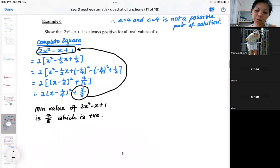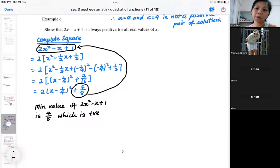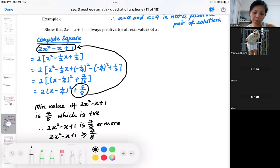Complete square is meant to tell you the minimum or the maximum. In our case, it's the minimum value, so my conclusion is this is 7/8 or more. That means the whole function will always be greater than or equal to 7/8, so therefore the whole function will be positive.